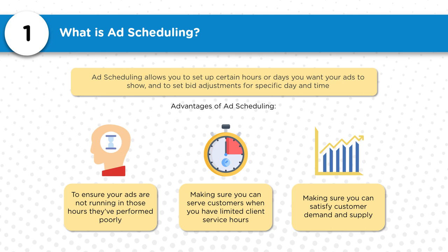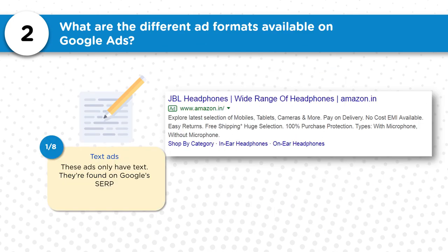What it really comes down to is making sure you can satisfy customer demand and supply — showing your ads when you can best fulfill the customer's needs. Take advantage of ad scheduling: schedule according to business hours, schedule according to how you can best serve the customer, and don't run ads when you know performance is going to be poor.